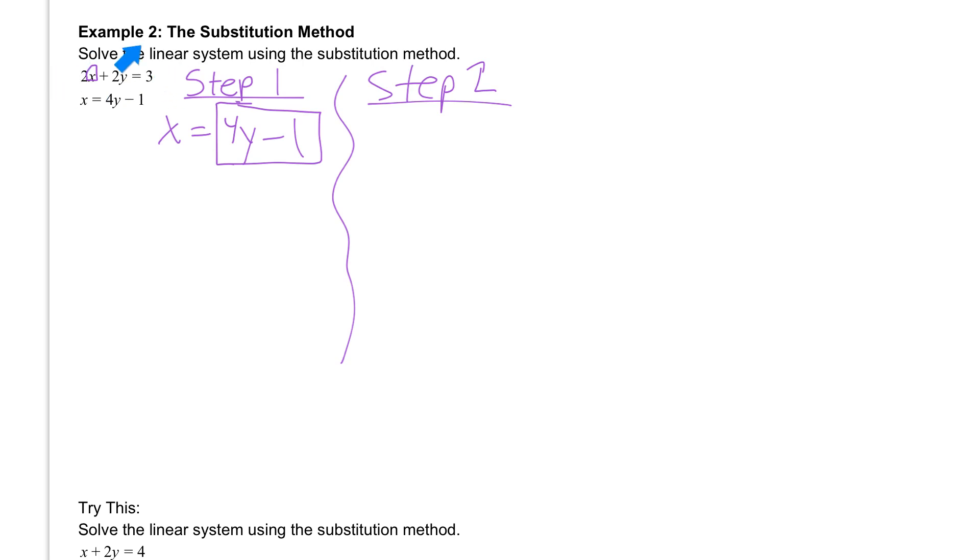So we're going to rewrite this first equation starting with the 2. And then right after that I have my box. And I'm going to put in my box what I have in here, which is the 4y minus 1. And then continue on. So after that was a plus sign. After that is my 2y. After that is the equal sign. And then 3.